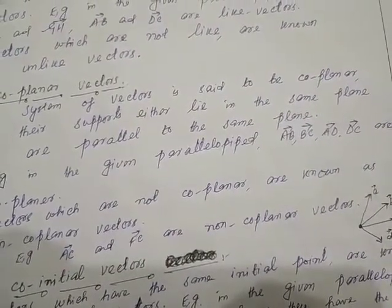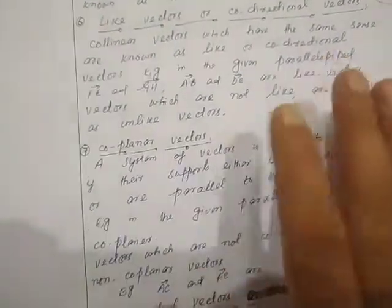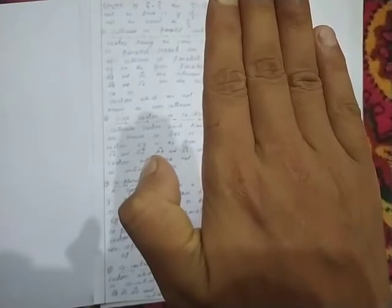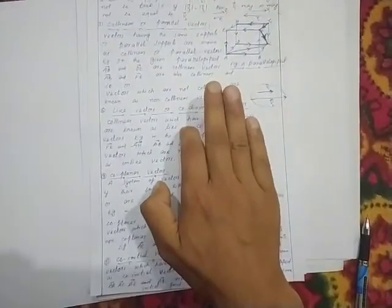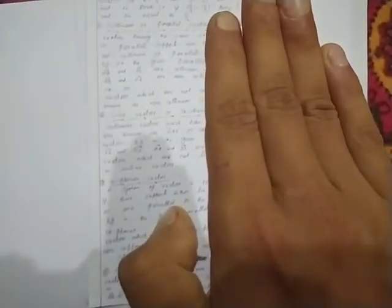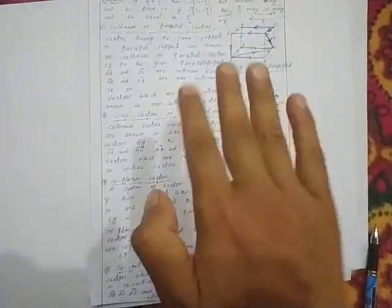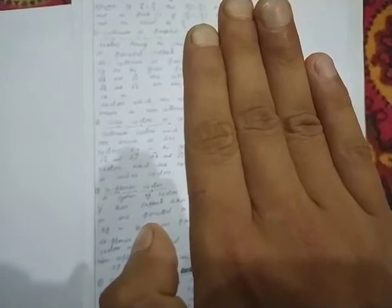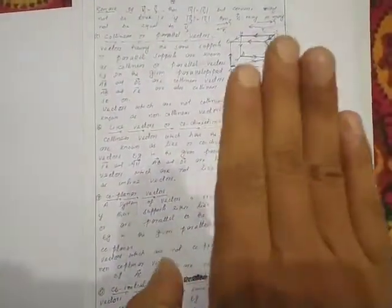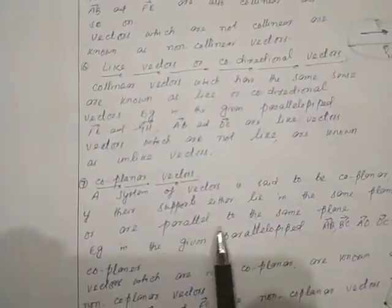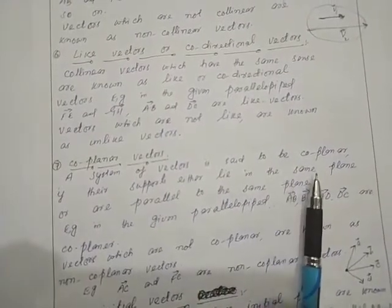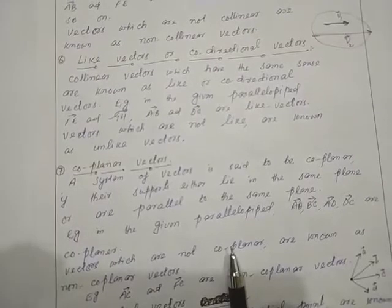All these vectors which are in the same plane or whose supports lie in parallel planes are called coplanar vectors. For example, suppose this is a plane and another plane is parallel to it — vectors placed on either of these two parallel planes are also called coplanar vectors, even though they don't lie in the exact same plane.